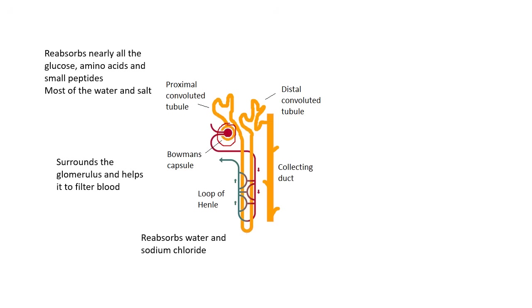It passes down the descending then the ascending loop of Henle, and goes into the distal convoluted tubule. Distal, as in distant — far away from the glomerulus. What happens there? This fine-tunes the reabsorption. It may absorb a little bit more water, a bit more salt, just to get the perfect balance — so it fine-tunes the absorption.